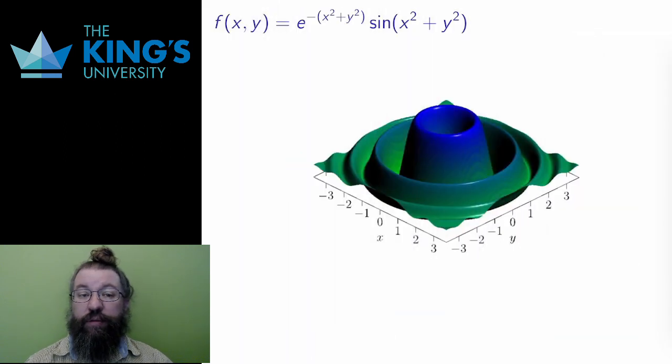Here is another graph. This is a very similar graph, but now the oscillations of the sine function, moving outwards in concentric circles, are damped by an exponential term.